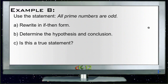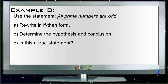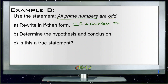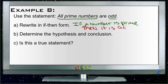Example B says: use the statement 'all prime numbers are odd,' rewrite it in if-then format, determine the hypothesis and conclusion, and identify whether or not it is a true statement. To rewrite it in if-then format, we identify the subject — all prime numbers — and the occurrence — are odd. This one looks like it's just written in reverse order. So we write: if a number is prime, then it is an odd number.